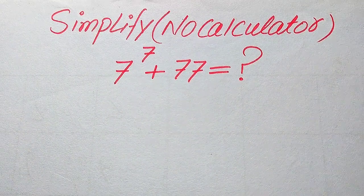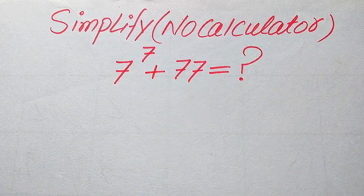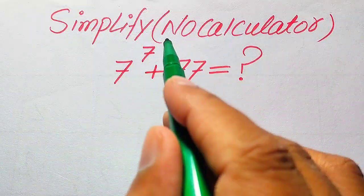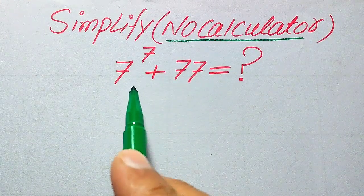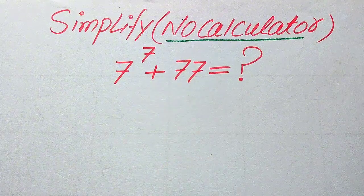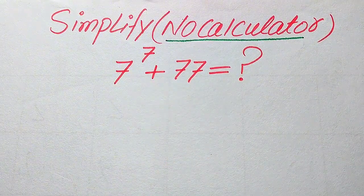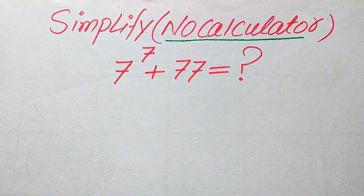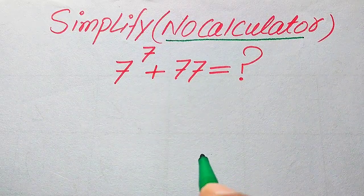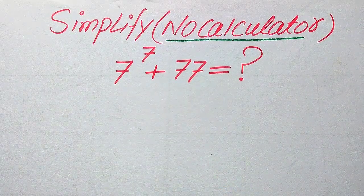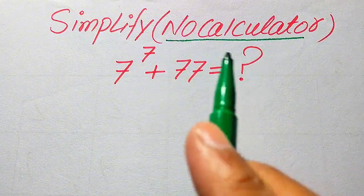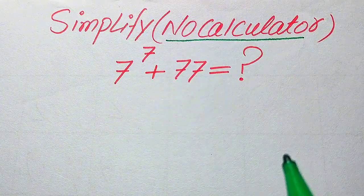Hello everyone. How to simplify this nice algebraic expression without using the calculator: if we have 7 to the power of 7 plus 7 to the power of 7 plus 7 to the power of 7, what does it equal? We write this algebraic expression into simplified form. If you have any other method in mind, please don't hesitate to write it in the comment section. Remember, the calculator is not allowed.